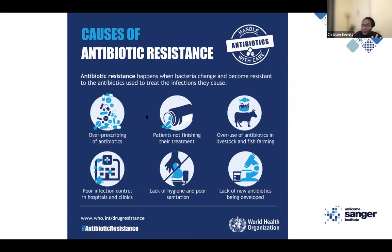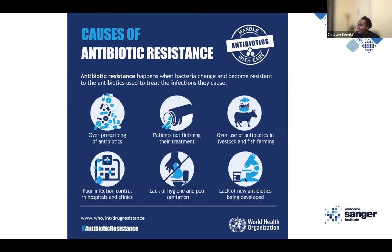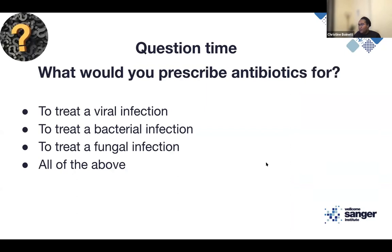Your immune system really kicks in from day three, which is why courses are mostly seven days. Other risk factors for AMR include overuse of antibiotics in livestock — when one cow gets mastitis, it's hard to contain the infection, so you often have to treat the whole herd. Poor infection control in hospitals is also a factor. Most food poisoning is from the fecal-oral route — washing your hands is critical. And there's a lack of new antibiotics being developed, even though there's a lot of push — bacteria are very good at circumventing anything.